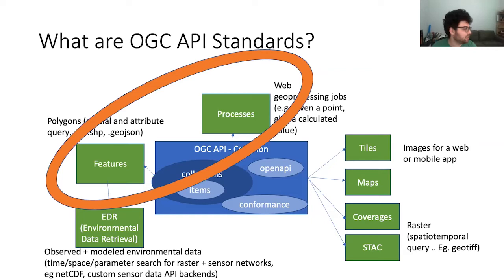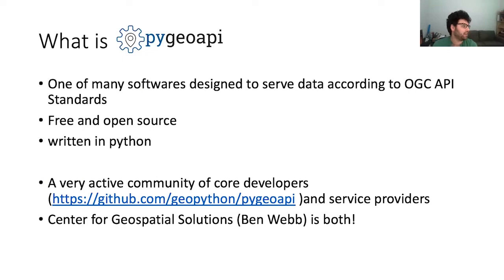Talking about Features and Processes mostly, although PyGeoAPI has fully implemented those and is also partially implementing or on the way to implementing the rest as well. So what is PyGeoAPI? It's one of many software tools designed to serve data according to these standards. It's free and open source, written in Python, and has a very active community of core developers — one of whom works for us at the Internet of Water team for the Center of Geospatial Solutions.